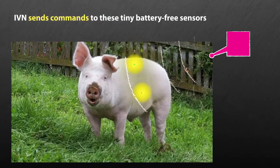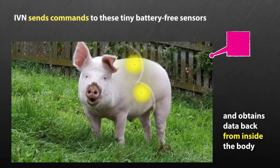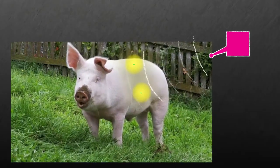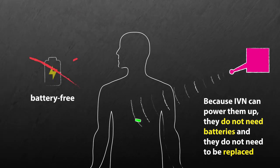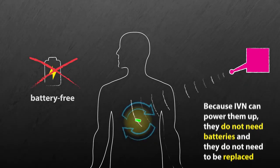IVN sends commands to these tiny, battery-free sensors and obtains data back from them from inside the body. And because IVN can power them up, they do not need batteries and they do not need to be replaced.